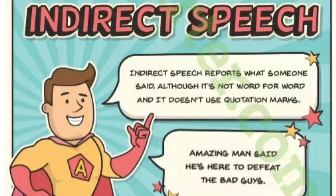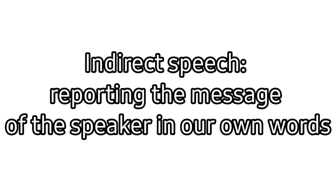Indirect speech reports what someone said, but it is not word for word and does not use quotation marks. Indirect speech uses the words of another person — what was said to one person is mixed with their own words and passed on to another. For example: 'Amazing Man said he is here to defeat the bad guy.' As another example: a teacher instructed the monitor to announce a class test, but the monitor came to class and announced it in their own way — that is indirect speech.